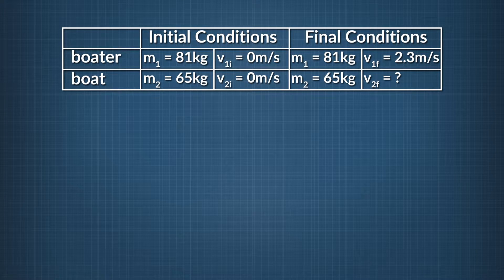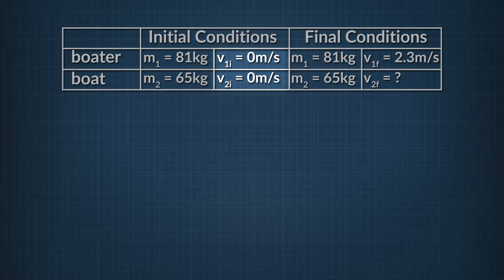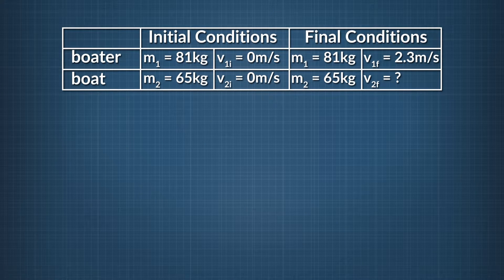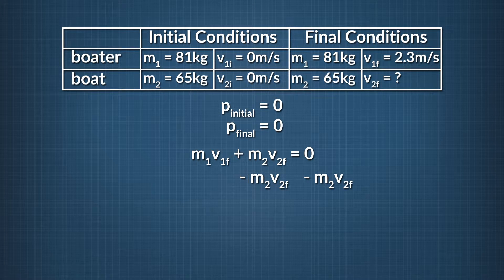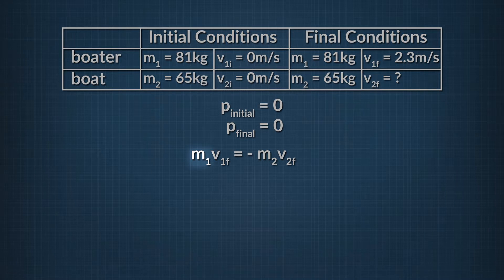Since the man and the boat are both initially at rest, both initial velocities will be zero. Therefore, the total initial momentum of the system is also equal to zero. Since momentum has to be conserved, the final momentum of the system must also be equal to zero. We can write that out as M sub 1 times V sub 1f plus M sub 2 times V sub 2f equals zero. We can move M sub 2 times V sub 2f to the other side of the equation and see that M sub 1 times V sub 1f equals negative M sub 2 times V sub 2f.